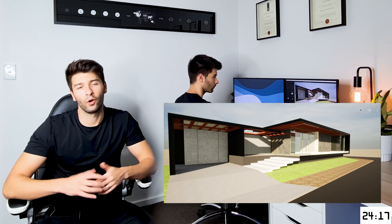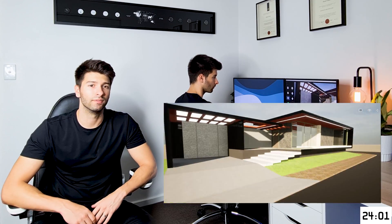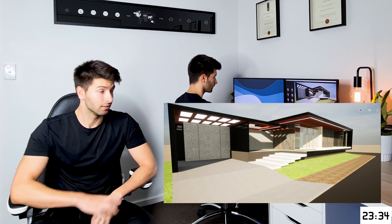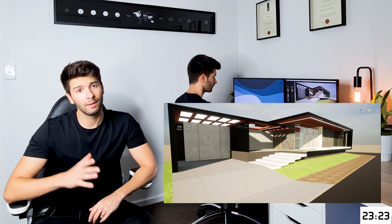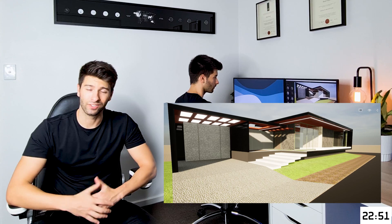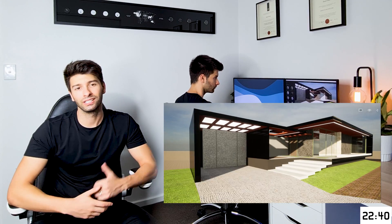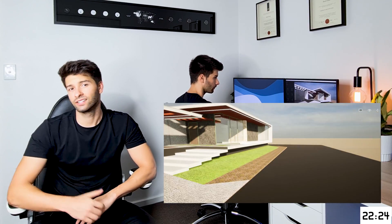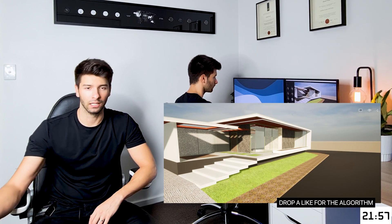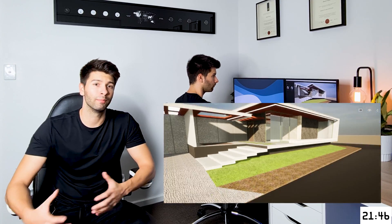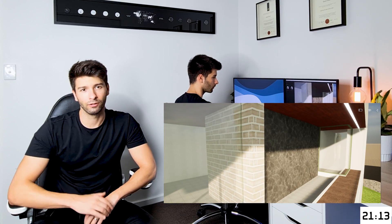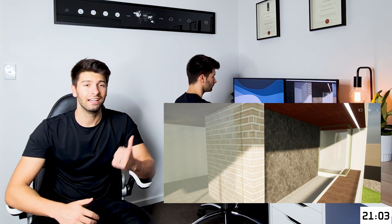Once you have the photo set up in Twinmotion and you've saved that first view, there are a couple of things you want to do. First, make sure your settings are correct. I'm going to be posting this to Instagram, so I want it in Instagram format — four by five. I export all my photos at 4,000 by 5,000 pixels because it gives me enough pixel density to edit later in Lightroom. If your computer can't handle it, drop it down to 2,000 by 2,500 and you'll still get Instagram-ready shots directly out of Twinmotion.